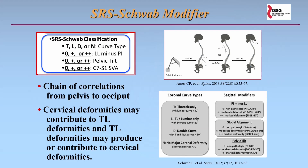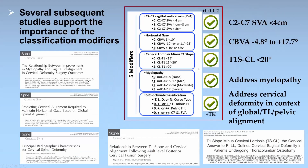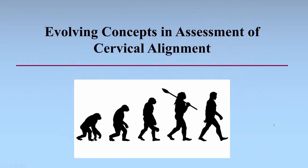The last modifier, and it was very important, was to include the SRS Schwab thoracolumbar deformity modifiers. These help to capture thoracolumbar alignment as well as pelvic alignment, which are important given the significant chain of correlations extending from the cervical spine down to the pelvis. Since we published this classification, a number of studies have suggested that the modifiers selected are important and that we are along the right lines. There has also been refinement of what the thresholds should be for a number of these modifiers.